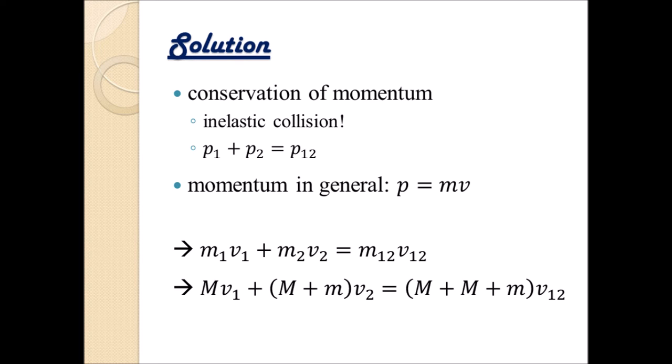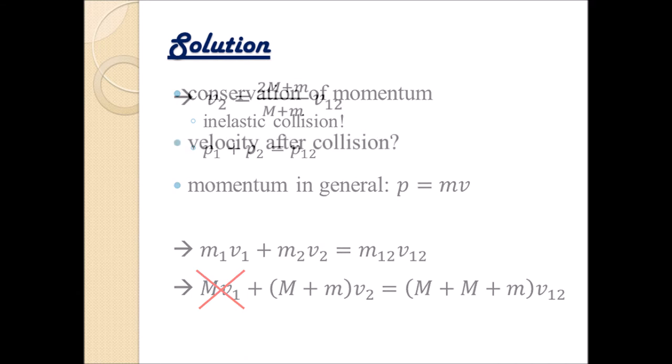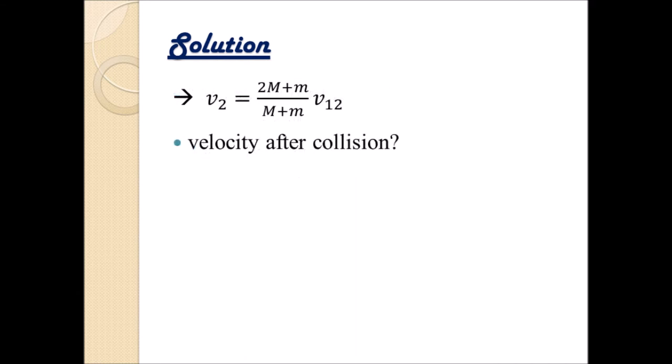What about the velocities? Well the first car is not moving so the velocity is zero. Hence this whole term, the first term on the left hand side can be deleted. Which simplifies our problem but it's not solved yet. We can write the velocity v2 that we are looking for in terms of the two different masses multiplied with the joint velocity v12. But what is actually the velocity after the collision?